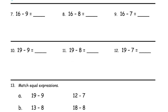Now we're working with 16s. 16 is 10 and 6. Take away 9 — I'll have 1 left. 6 and 1 more is 7. 16 is 10 and 6 — take away 8, that's 2 left. 6 and 2 more is 8.